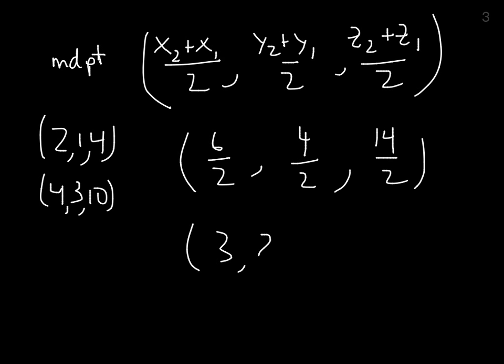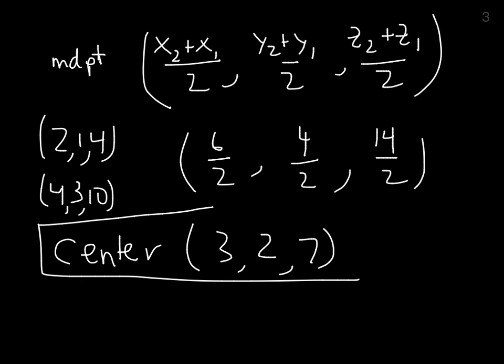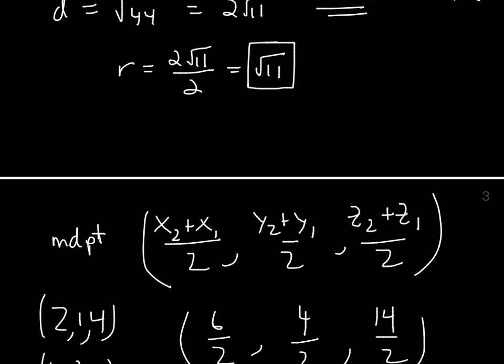(3,2,7) is the midpoint. The midpoint is the center of the circle. We have the center and we have the radius, √11.